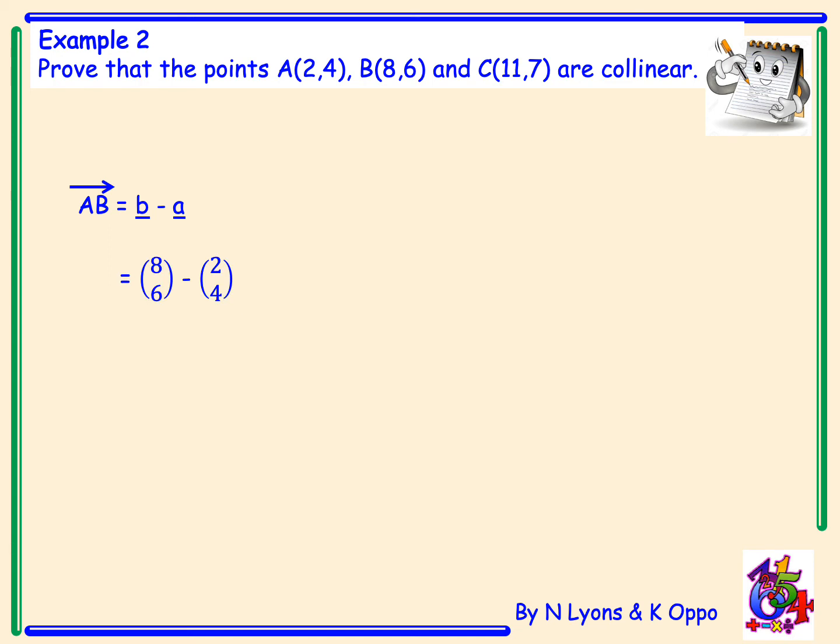So (8, 6) subtract (2, 4), which gives the vector AB as (6, 2).